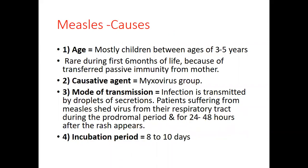Fast revision: Measles mostly affects children between the age of 3 to 5 years. It is rare during the first 6 months of life because of transferred passive immunity from the mother. The causative agent is the Myxovirus group. Mode of transmission is by droplet secretions — patients shed virus from their respiratory tract during the prodromal period and for 24 to 48 hours after the rash appears. Incubation period is 8 to 10 days.